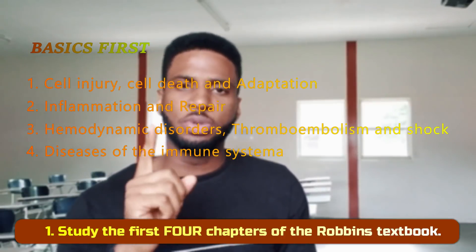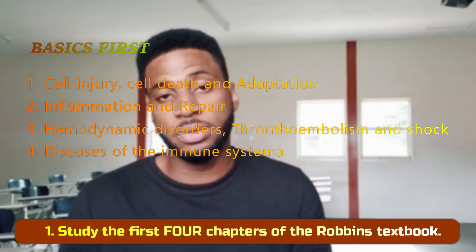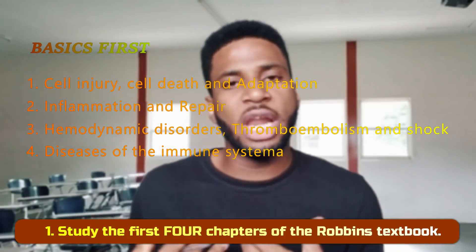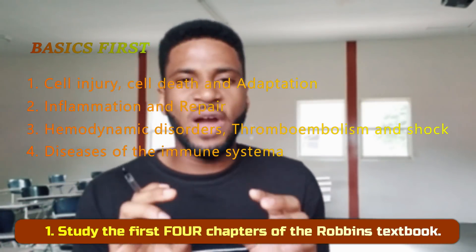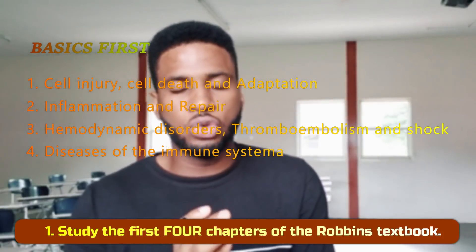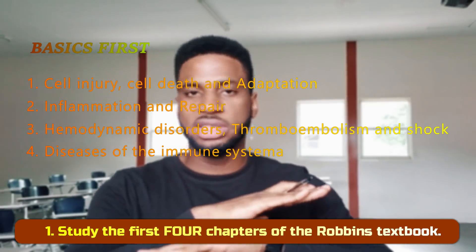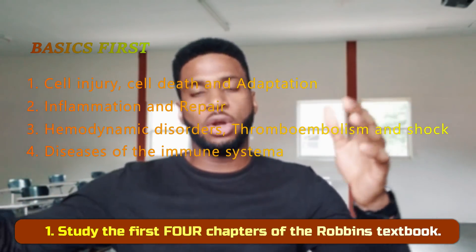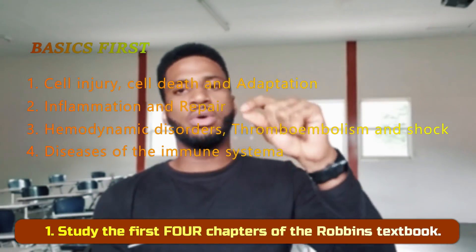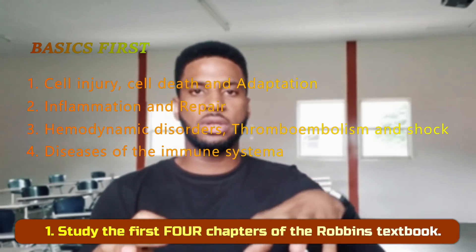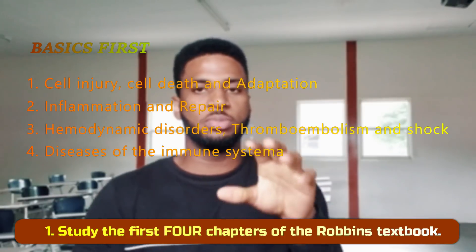If you haven't done pathology before and you're on a break or just starting out, I would advise you to pick up the Robbins textbook — not the biggest one, the basic smaller-size Robbins — and go through the first four chapters. The Robbins book is supposed to be a reference book; some students do read it fully, and if you can, that would be beautiful. But those first four chapters are very essential to forming a stable foundation for pathology. All diseases you're going to learn — bacterial infections, autoimmune disease, whatever it is — are going to be built on those first four chapters.